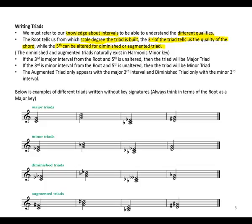Diminished and augmented triads naturally exist in the harmonic minor key. If the third is major from the root and the fifth is unaltered, then the triad will be a major triad. The augmented triad only appears with the major third, and the diminished triad only with the minor third.